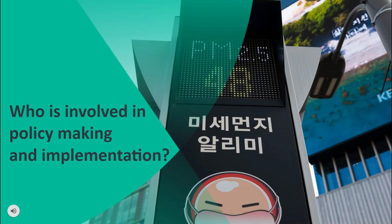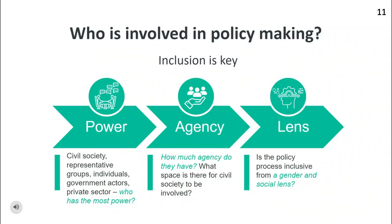This section will cover various stakeholders who are involved in the decision-making process and implementation, and how they influence each other. The process of policy-making is generally seen as one led by the government. However, the process can also be driven by external actors, such as the private sector or civil society. In order for policy-making to be transparent and fair, it should involve stakeholders from all sectors to ensure that the consequences are fairly borne.